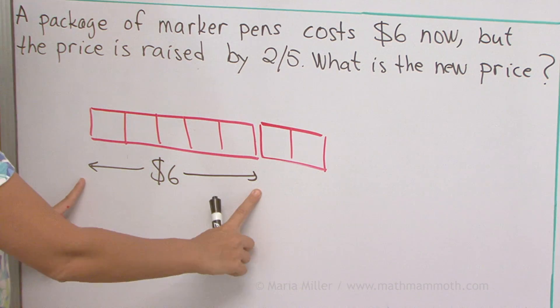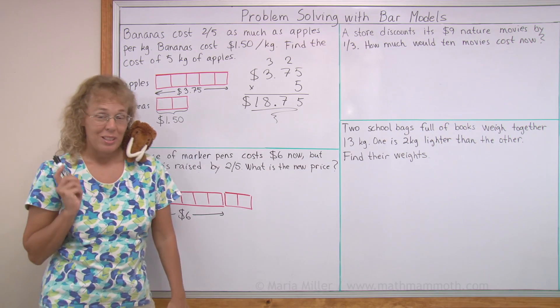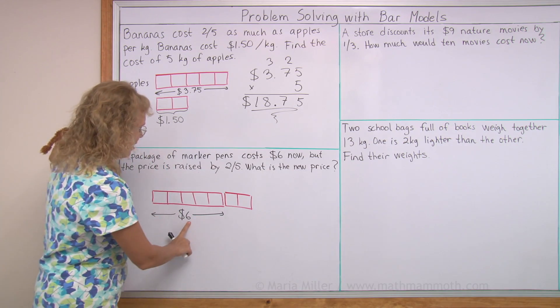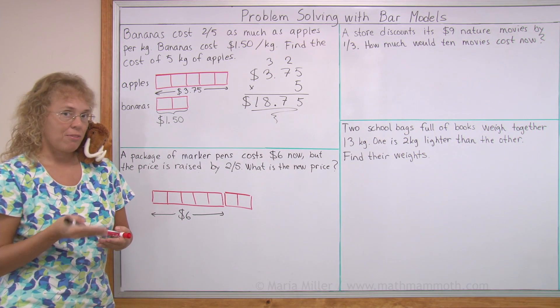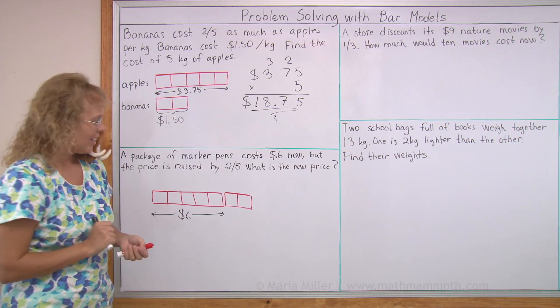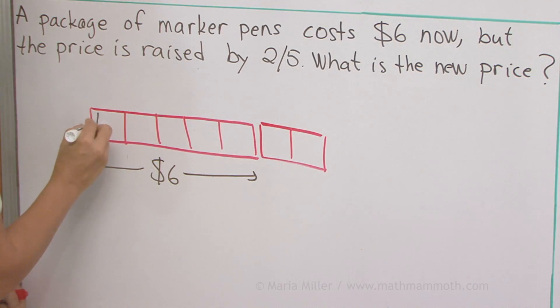So to solve it, we take $6 divided by five. You know, you can do that mentally. Think of this as $5 plus $1. $5 divided by five is $1. And then the $1 divided by five is 20 cents. So one of these blocks is $1.20.